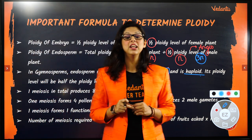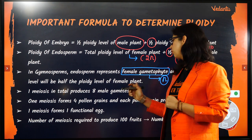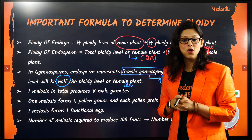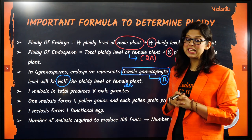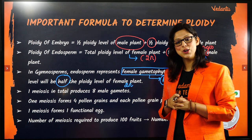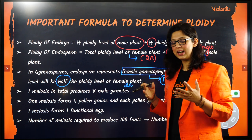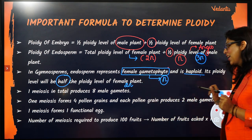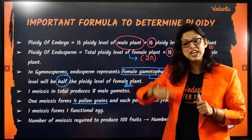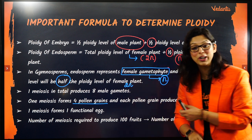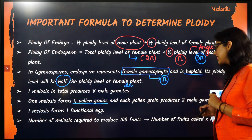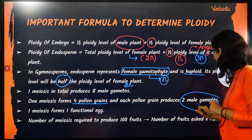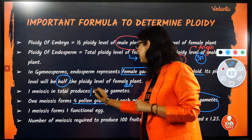In gymnosperms, the ploidy level of endosperm will be half the ploidy level of the female plant. The female plant is 2N, so it is half N. One meiosis in total produces 8 male gametes. One meiosis forms 4 pollen grains, and every pollen grain at the time of pollination is at the 2-cell stage. That means it has 2 cells: 1 vegetative nucleus and 1 generative nucleus. So 2 male gametes per pollen grain across 4 pollen grains means total male gametes will be 8.